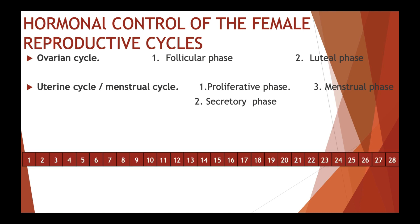Ovulation occurs about once in 28 days, from puberty until menopause, from one of the two ovaries alternately. Both of these cycles are regulated by hormonal activities, which links the two cycles. Ovarian follicle growth and ovulation are synchronized and occur coinciding with the establishment of the uterine lining. If we consider day 14 as the day of ovulation, the follicular phase occurs from day 1 to day 14, and the luteal phase follows.